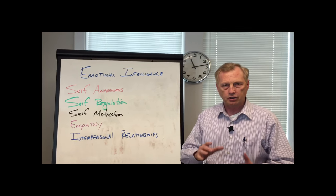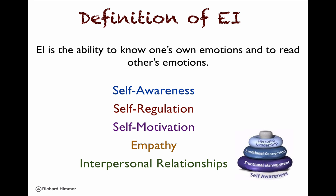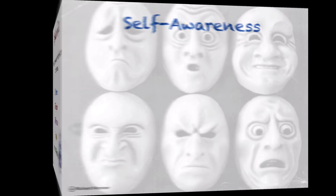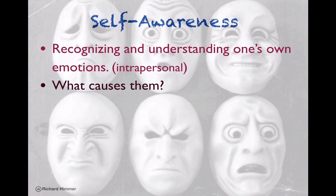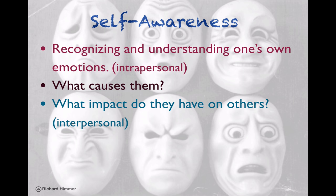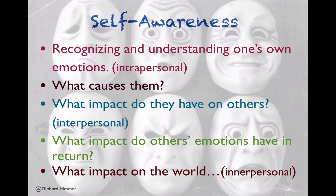Now let's break those down briefly so they make sense. The definition of emotional intelligence is the ability to know one's own emotions and to read another's emotions. Starting with self-awareness — it is recognizing and understanding your own emotions, an intrapersonal relationship. What causes them? What impact do your emotions have on others? An interpersonal relationship. What impact do others' emotions have in return within that same interpersonal relationship, and then on the world?